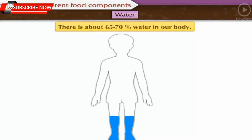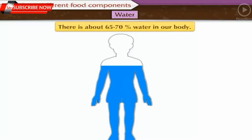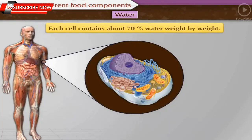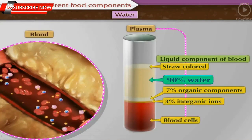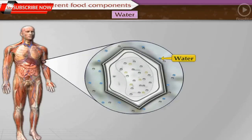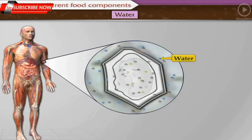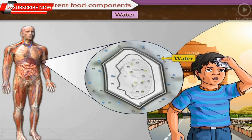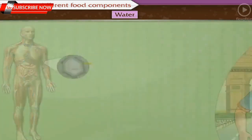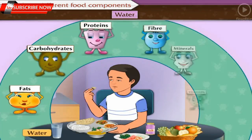Water: there is about 65–70% water in our body, and each cell contains about 70% water by weight. Blood plasma also contains 90% water. Functioning of cells and the whole body gets disturbed even with a little loss of water — that is why we experience dryness in the mouth when thirsty. Hence, water is also an essential nutrient.